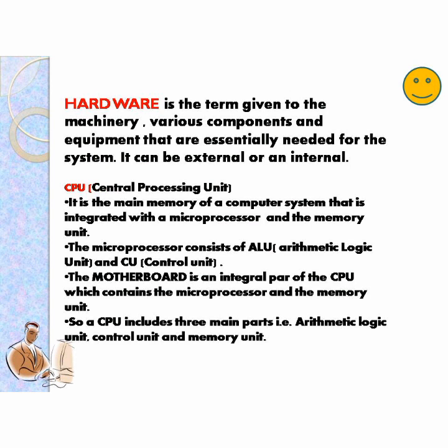It is the main memory of a computer system that is integrated with a microprocessor and the memory unit. The microprocessor consists of ALU and CU. The motherboard is an integral part of the CPU which contains the microprocessor and the memory unit. A CPU includes three main parts: arithmetic logic unit, control unit and memory unit.